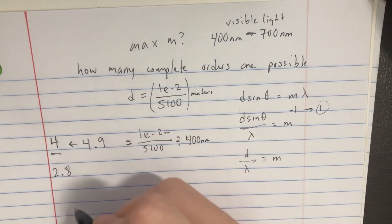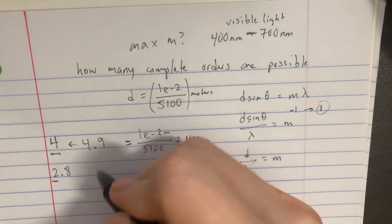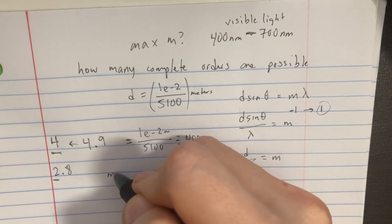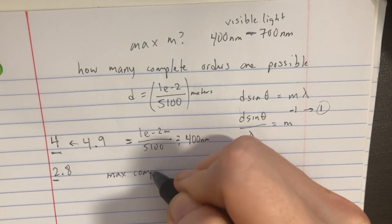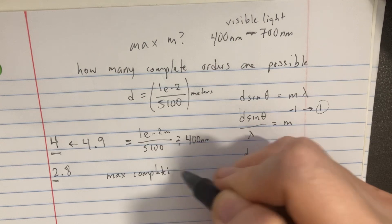So two point eight was kind of the other one. Remember, we have to round that out to two. So really, we can see how the maximum complete orders here are just going to be two.